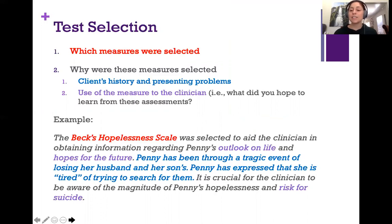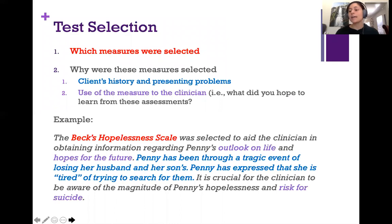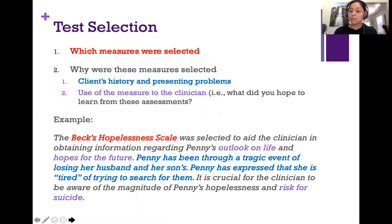For example, if the client's history indicated symptoms of depression, you should be using a depression measure. If they didn't have any particular specific symptom cluster, you'd use a general measure and then follow up with more specific ones.